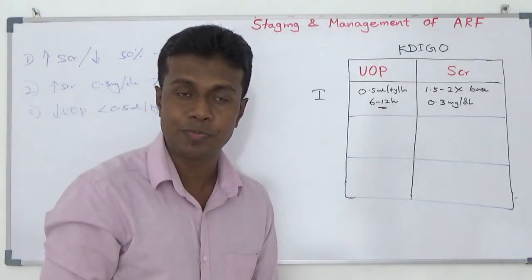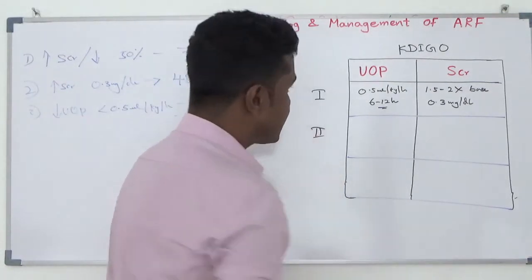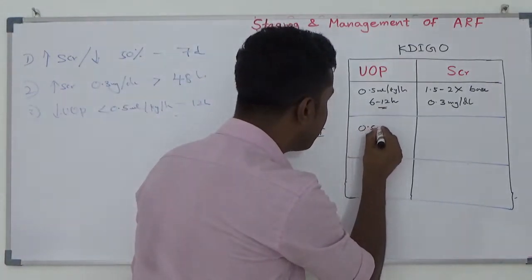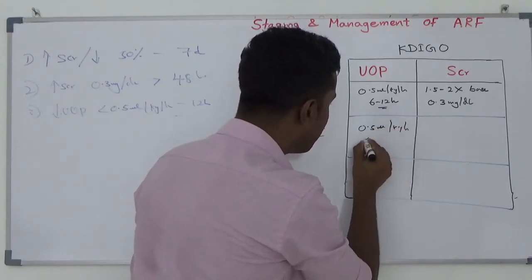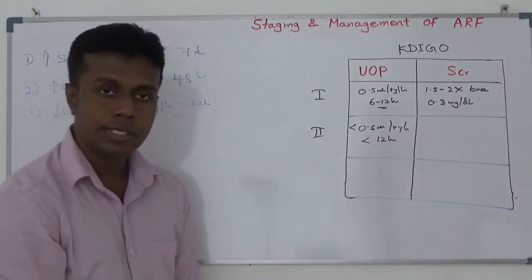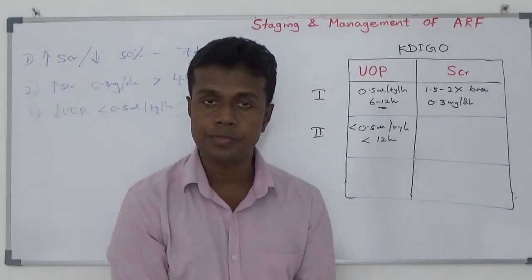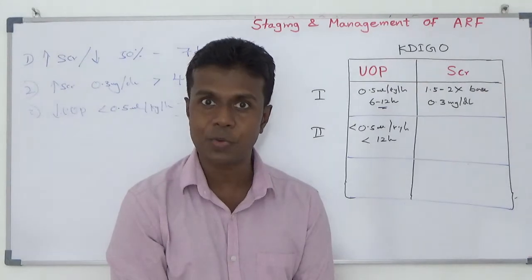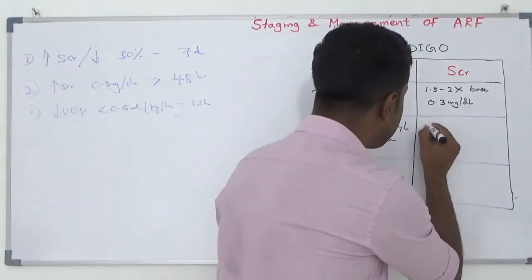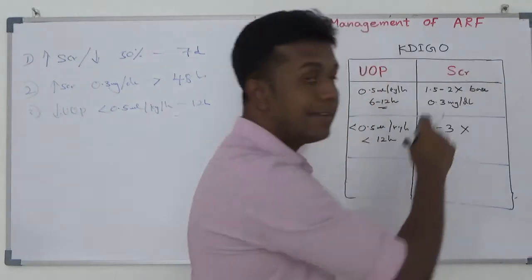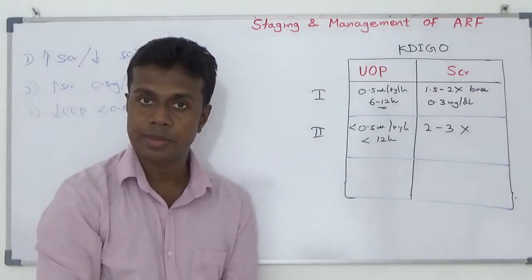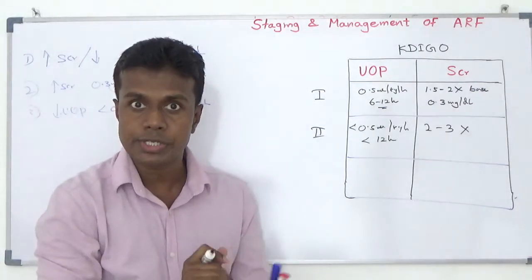Moving to Stage 2: if you found a patient with urine output less than 0.5 ml per kg per hour for more than 12 hours, you can label your patient as Stage 2 according to KDIGO — Kidney Disease Improving Global Outcomes. For serum creatinine: 2 to 3 times elevation from baseline value means Stage 2 acute renal failure.